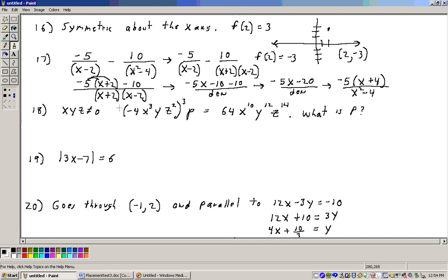On this problem, it says none of these are 0. What is the value of P here to make the left side equal to the right side? Well, go ahead and take this third power through. If we do that, negative 4 cubed is actually negative 64. x cubed cubed would be, multiply your exponents together, you get x to the 9th. This would be y cubed. And this would be z to the 6th.